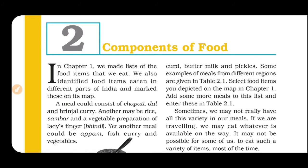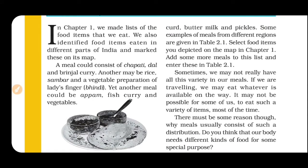In chapter one we made the list of food items that we eat. We also identified the food items eaten in different parts of India. A meal could consist of chapati, dal and brinjal curry; another may be rice, sambar and a vegetable preparation of lady's finger. Jo log non-vegetarian hain woh fish khate hain, meat khate hain. Ye sab alag-alag variety of foods hum haroze as food obtain karte hain.